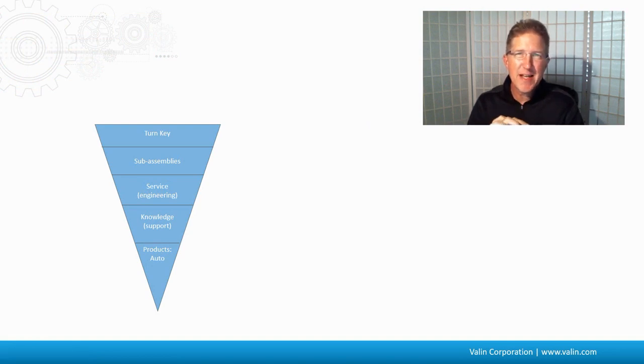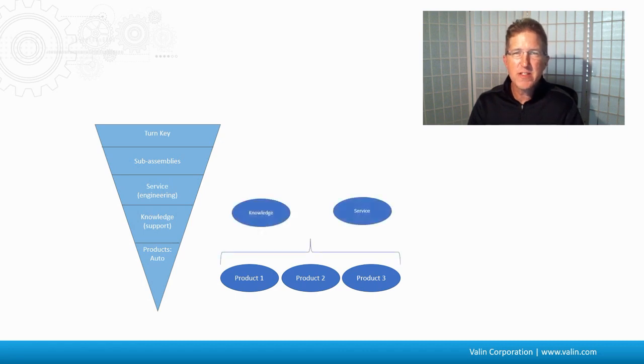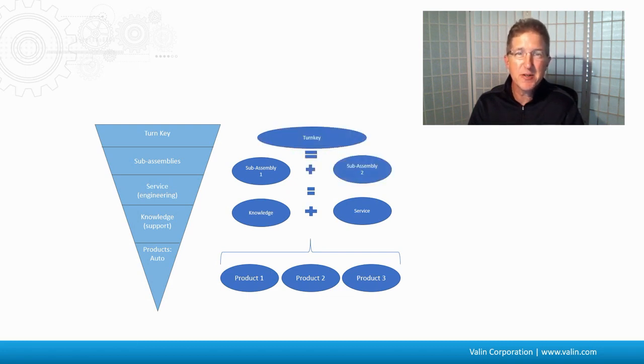I like to use this upside-down triangle. It puts products at the bottom and turnkey systems at the top. In between, starting from the bottom, there's knowledge and support, service or engineering, and subassemblies. If we put the products at the bottom and then add some knowledge and service, we end up with a subassembly. If we put enough of those subassemblies together, we get a turnkey system.